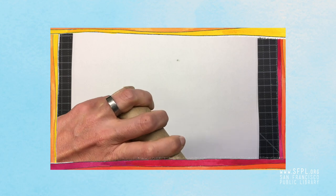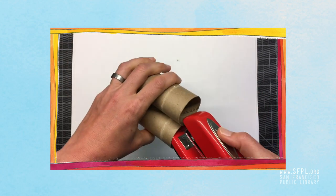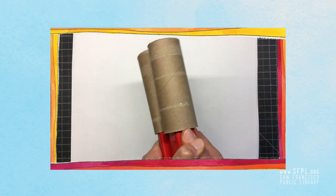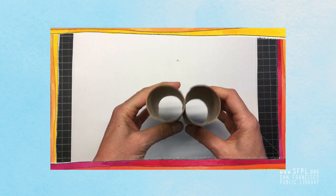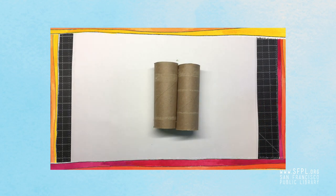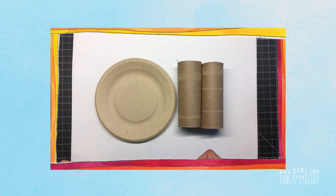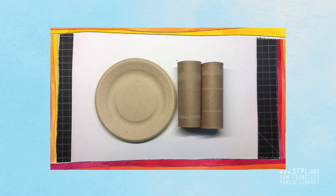Staple your toilet paper rolls together and grab a piece of paper or a paper plate, something to put your paint out on.